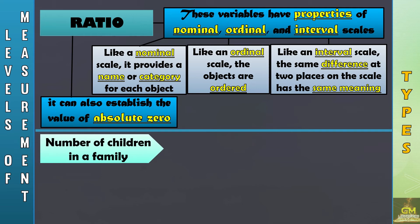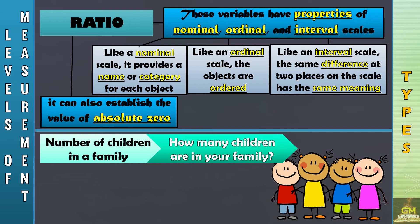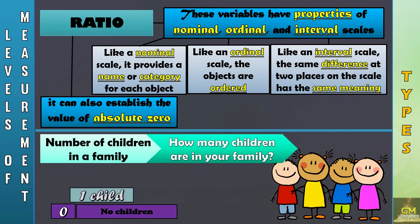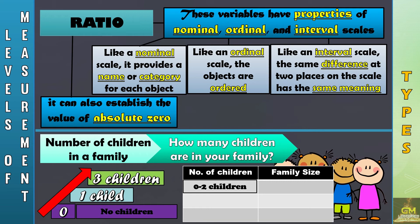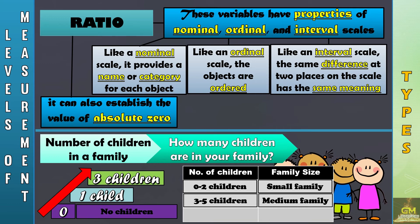Let's have this example: the number of children in a family. The question is: how many children are in your family? This is an example of a ratio level of measurement because a family that answers zero would actually mean that there are no children in the family. Of course, a family that answers that there is one child would be on a higher level. In terms of the interval level of measurement, the families can be grouped according to family size. If a family would have zero to two children, they can be considered to have a small family. If they have three to five children, they can be recognized as a medium-sized family. If a family would have six or more children, they could be considered to have a large family. Hence, we could also rank the family in terms of the number of children as well as the family size.